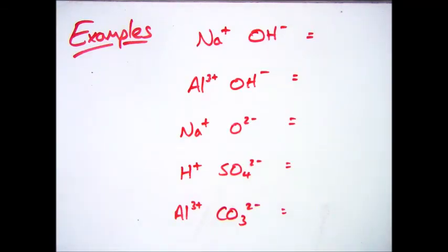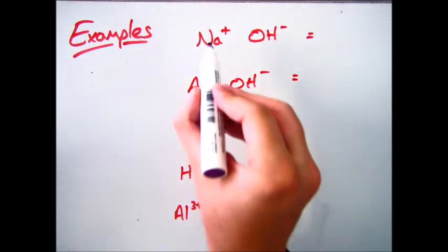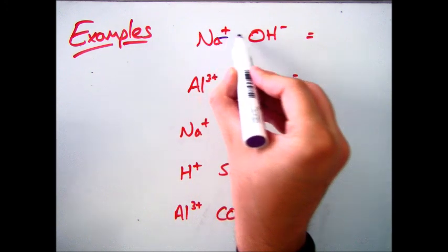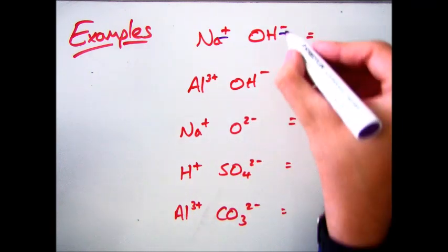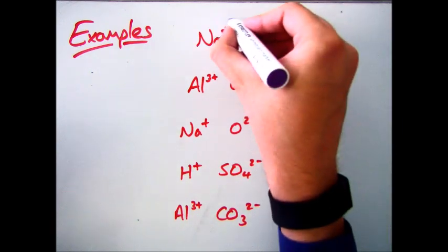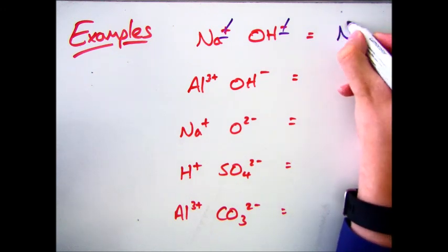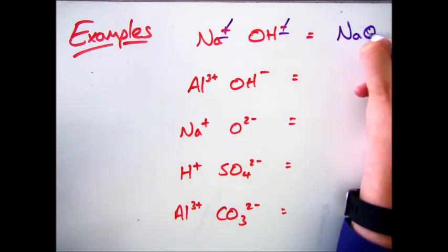Let's have a look at a couple of examples then. So in the first place we have sodium hydroxide. Now in this case, both the plus and the minus are the same charge. As I said before, our exception is, in this case we do nothing. So we have 1 Na and 1 OH. So our formula is NaOH.